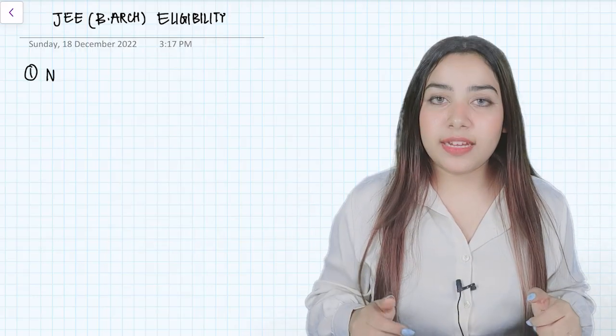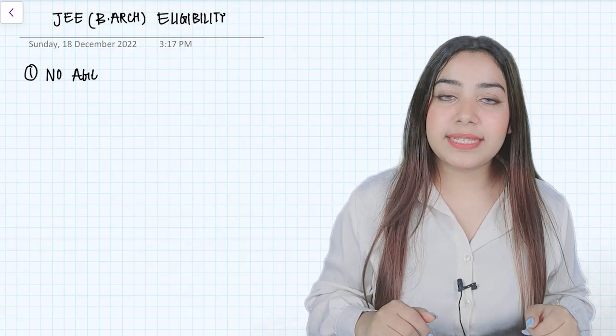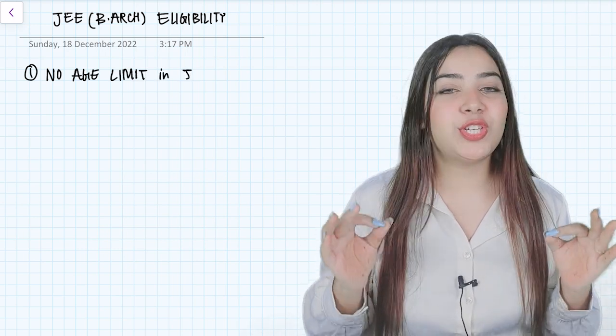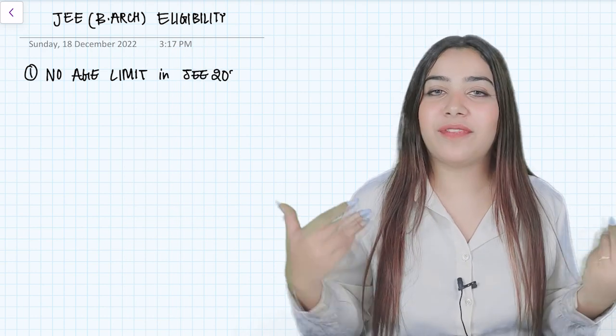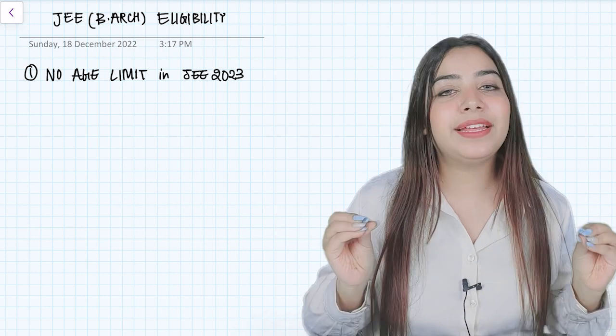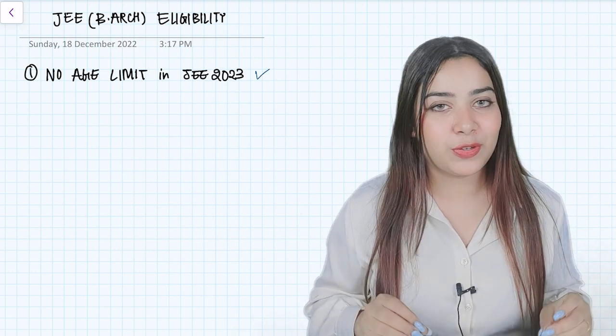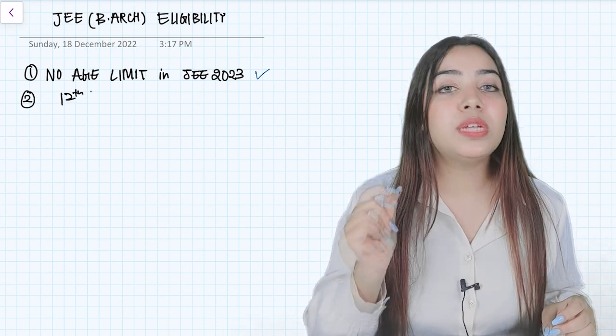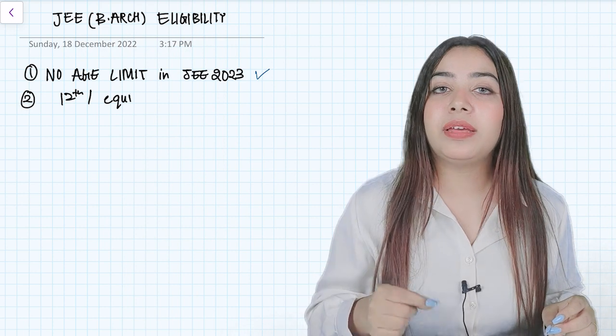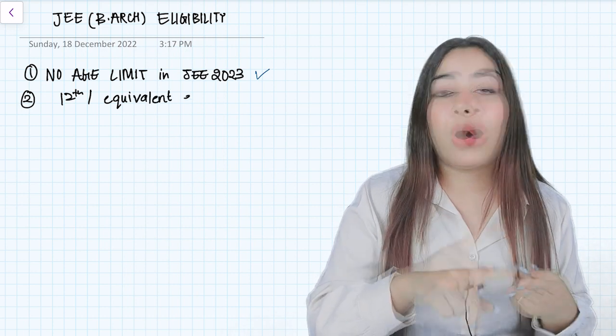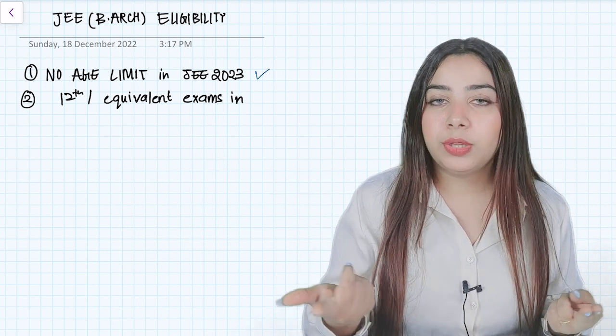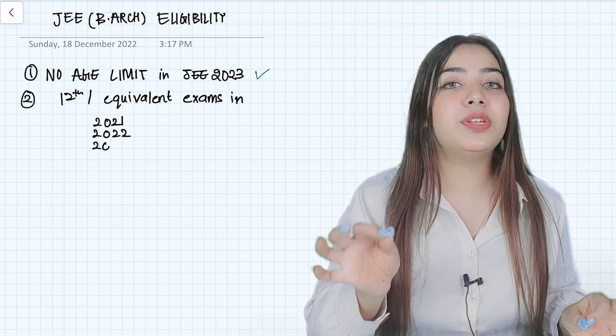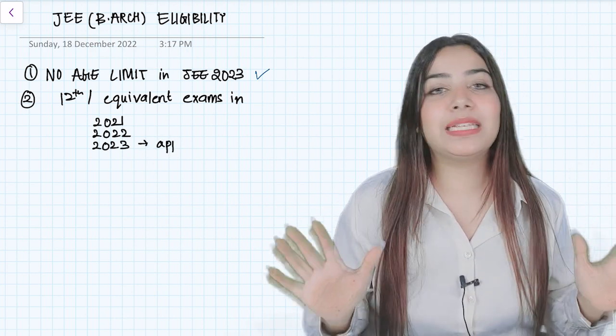The first eligibility criteria for JEE Paper 2 examination is that there is no age limit. You are of any age, you can give the JEE B.Arch examination. But there is a game changer: you should have appeared for your 12th board examination in the year 2021, 2022, or you would be appearing in 2023. So you can be of any age group, it doesn't matter, but you should have given your board examination just maximum two years back.